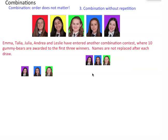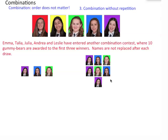Now, let's say we pick Leslie first, then Andrea, then Julia. What if we pick Leslie first, then Julia, then Andrea? Is there a difference between these two? No. These three people are each getting ten gummy bears no matter who was picked first, second, or third. There is no first, second, and third. And that's what makes it a combination. It doesn't matter whether we pick them like this or like that.